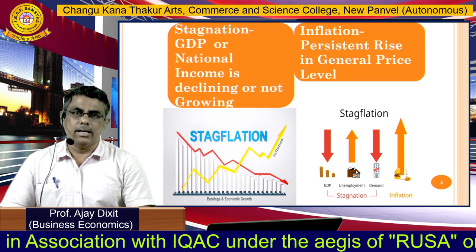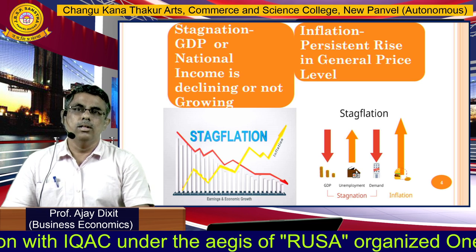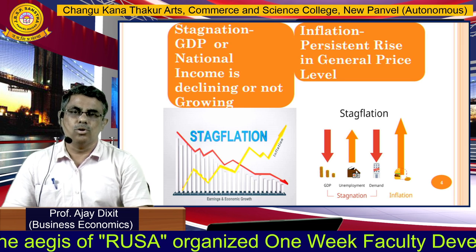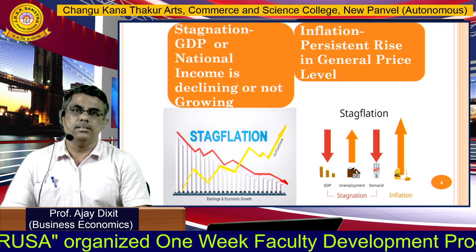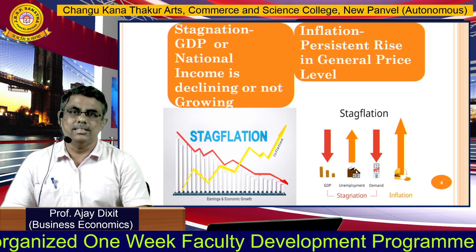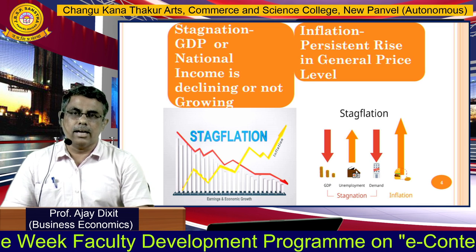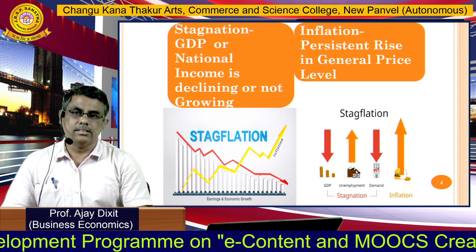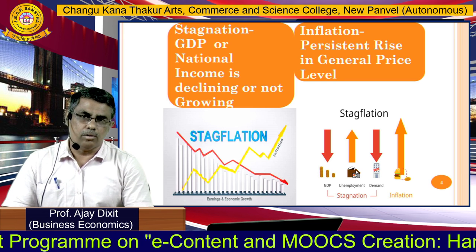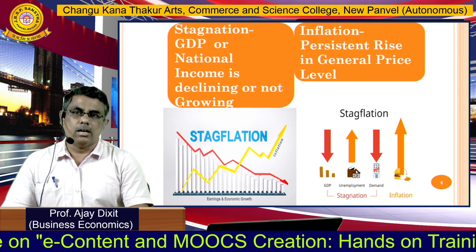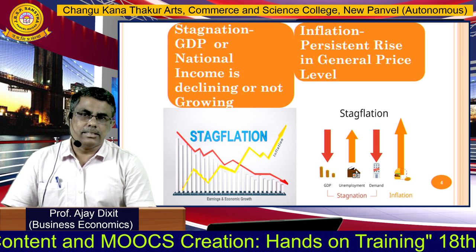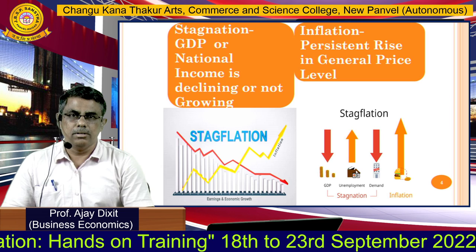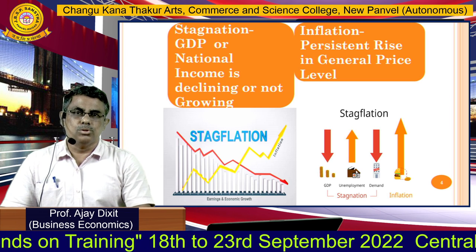With these two diagrams we can understand this concept. Stagnation means GDP or national income is declining or not growing. On the other hand, inflation — a persistent rise in the general price level — is there. In the first diagram, inflation is going up while the GDP growth rate is going down, creating a gap after the break-even. In stagflation, GDP is declining while the price level increases.